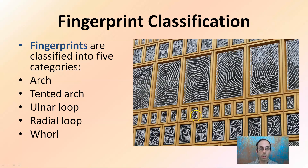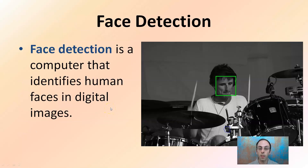We also have fingerprint classification. There are five categories: arches, tinted arches, ulnar loops, radial loops, and whorls. All of these can be a way of identifying certain patterns, classifying them, and comparing them to a known set or database.